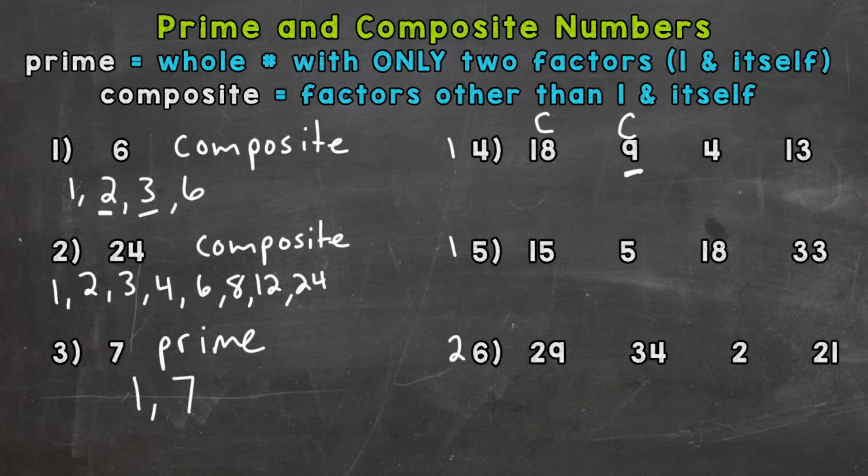Four. Well, one and four. And then also two. Two times two, right? So four is composite. And then the last one, this is going to be our prime number. The only numbers, only factors of thirteen are one and thirteen. So thirteen is our prime number there.